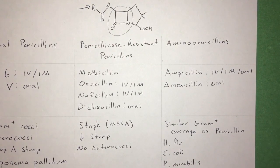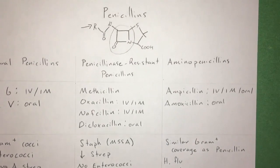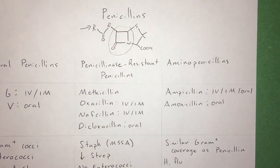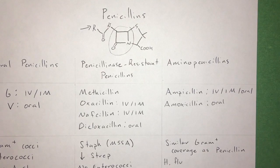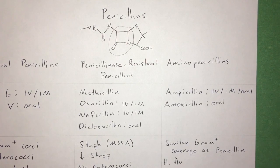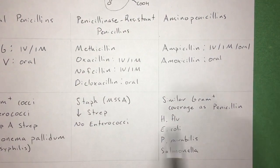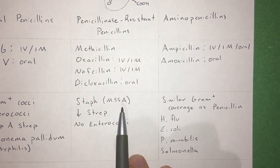The next category is the penicillinase-resistant penicillins. This would be an alteration to the R group so that penicillinase can no longer break down the antibiotic. Some examples of these are methicillin, oxacillin, and nafcillin, which are IV and IM, and dicloxacillin, which is oral. Methicillin isn't used very much anymore, but you'll see it on the MIC, and that's used to determine whether or not the staph is MSSA or MRSA.